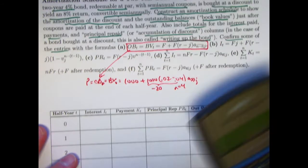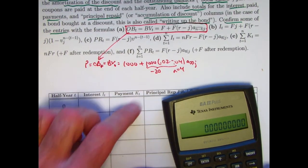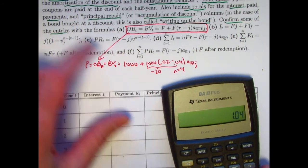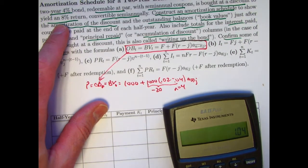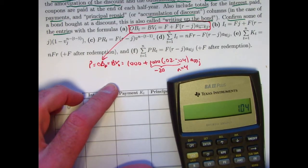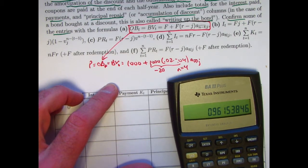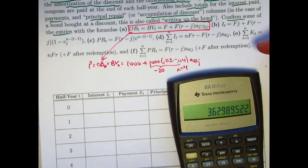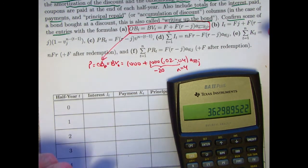What will A4 be? 1 plus J is 1.04. J again is 0.04, coming from half of the 8%. Take the reciprocal, that's V, raise it to the 4th power, subtract from 1, divide by 0.04. A4 is about 3.629895. We used that quantity in the last video, last couple videos.